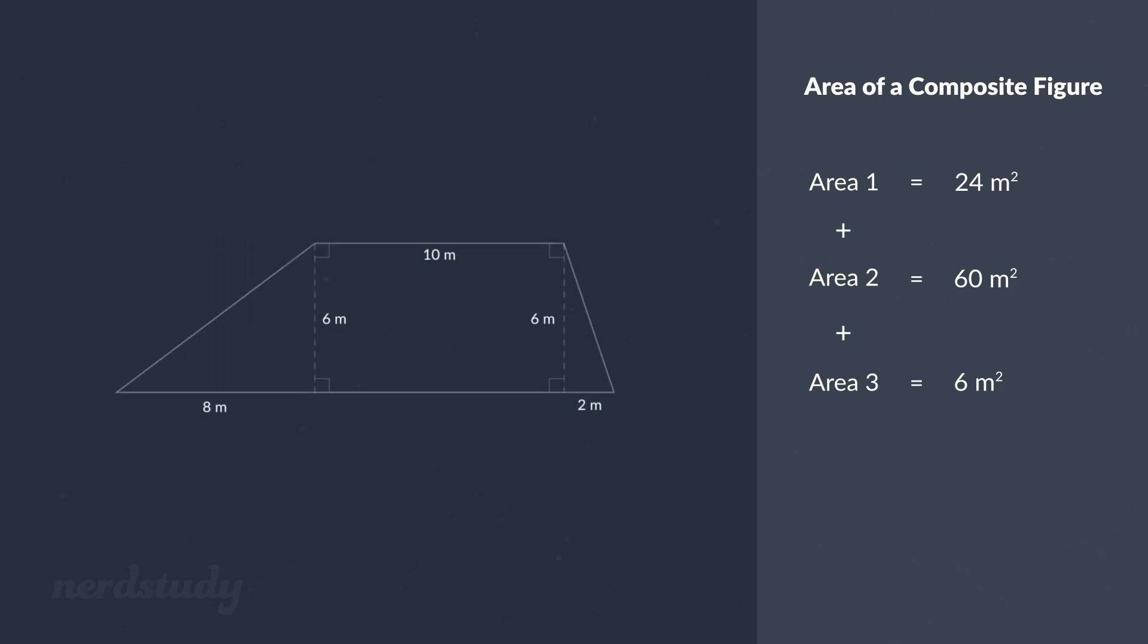All that's left now is to add up all three areas that we calculated separately. What we get is 24 meters squared plus 60 meters squared plus 6 meters squared which equals 90 meters squared.